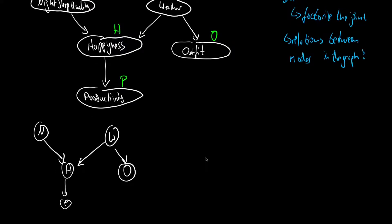It's about latent and observed nodes. So far we only have latent nodes, but now we can introduce some observed nodes. For example, assume you would model something with this directed graphical model — your happiness — but you don't have access to all the random variables. For simplicity or for whatever reason, you can only assess the weather, for instance.